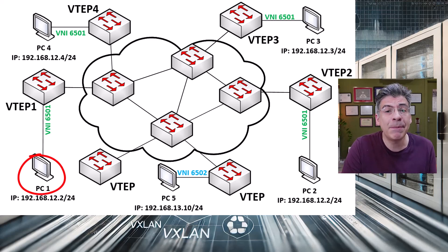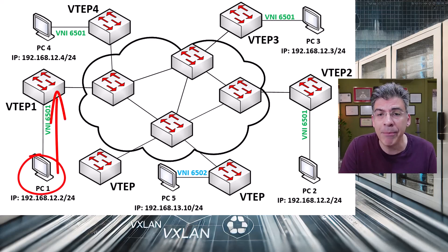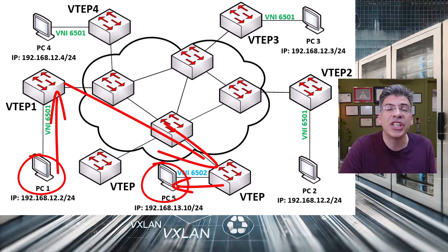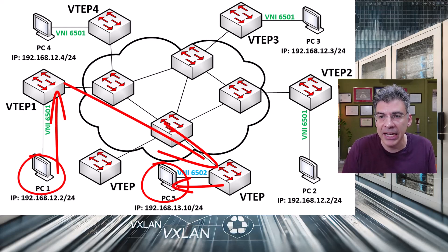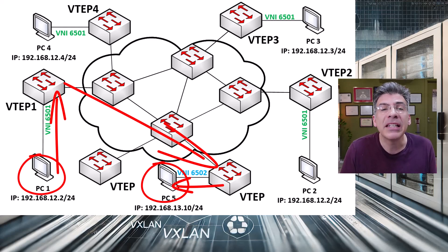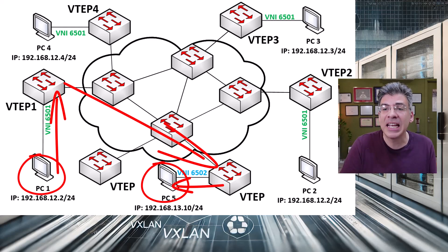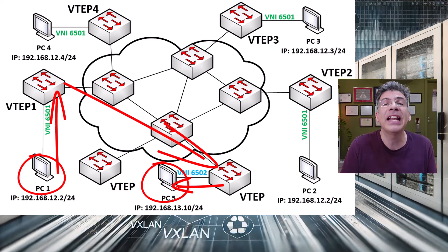If one of these PCs, for example, wants to communicate with PC5, which is in a different VNI, where would routing take place? It must take place on a VTEP, because routing must take place in the VXLAN overlay network.